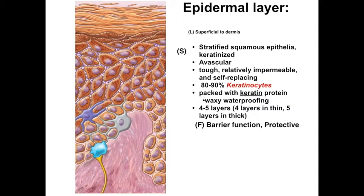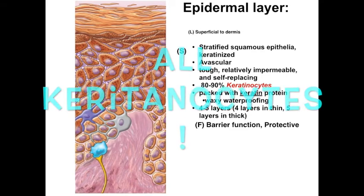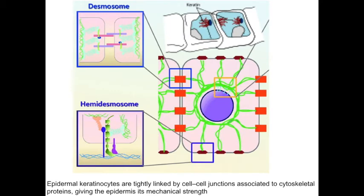The cells that make up the stratified squamous epithelia are called keratinocytes, named because of the large amounts of keratin protein they contain. Different types and levels of keratin are found in each layer. The more superficial keratinocytes are little but sacks of packed keratin, providing the waxy waterproofing quality of skin. The keratin in the deeper levels makes up the cytoskeleton that links the anchoring junctions and gives the epidermis its structural integrity and mechanical strength.